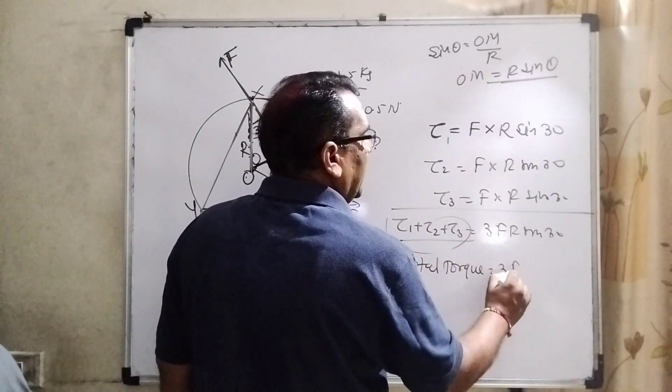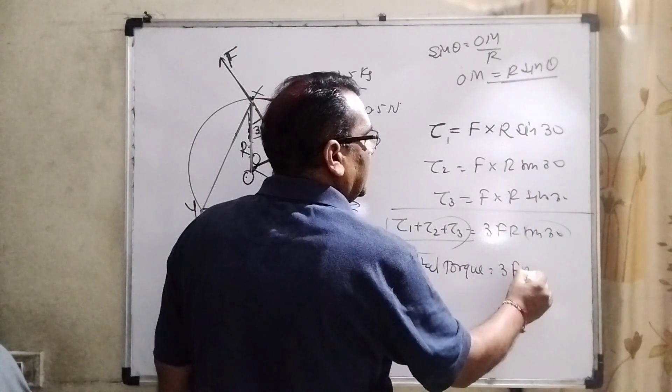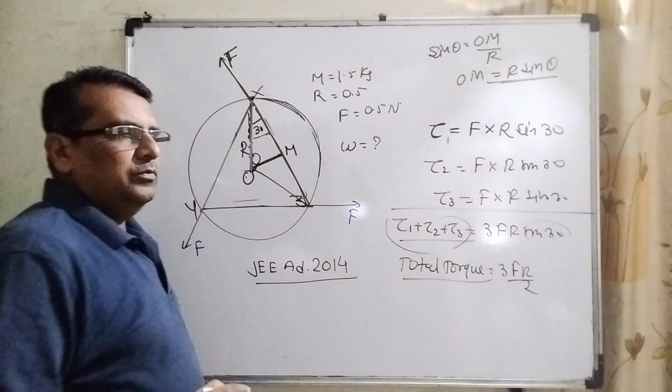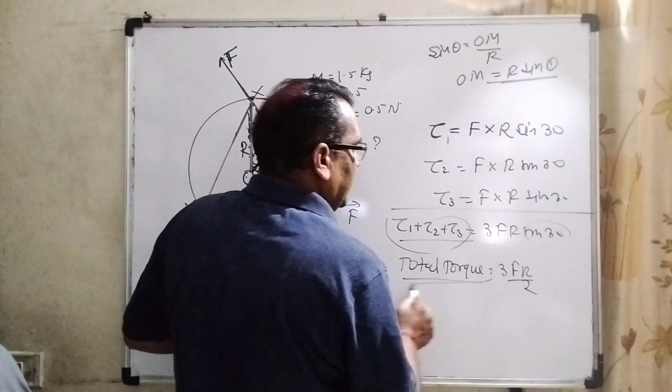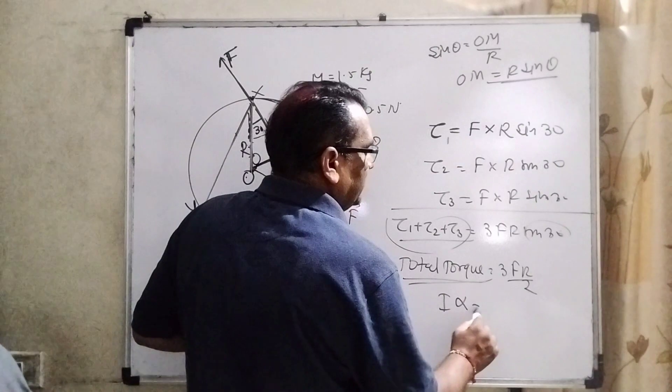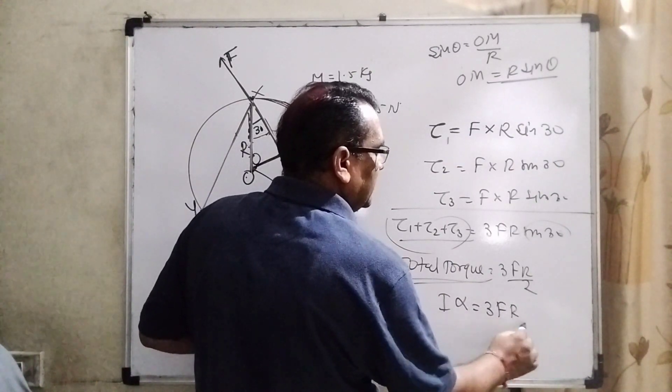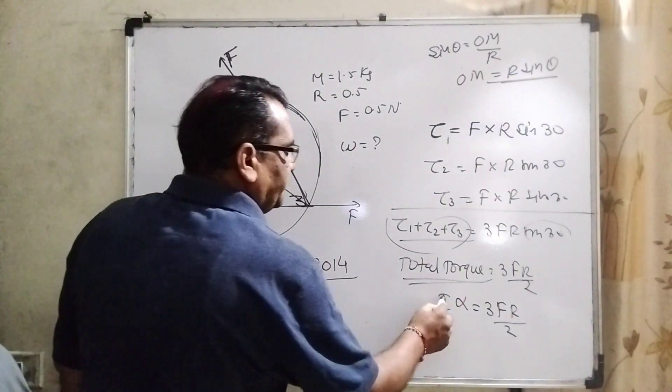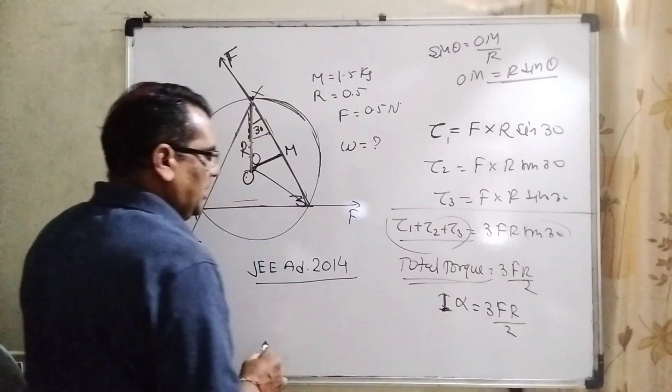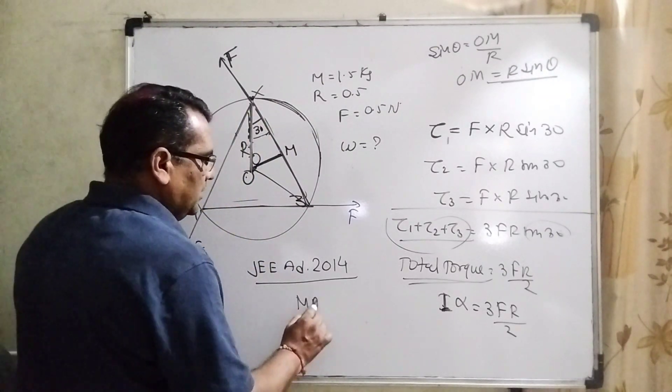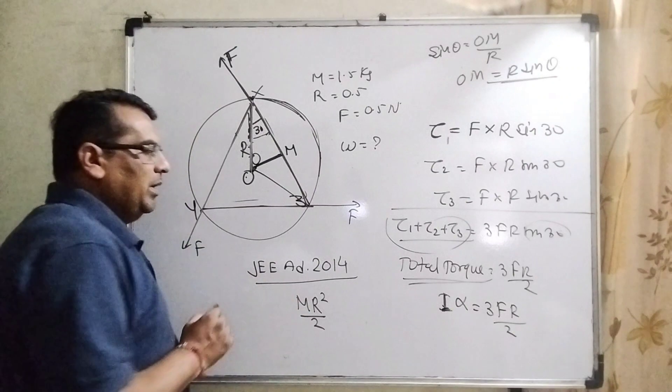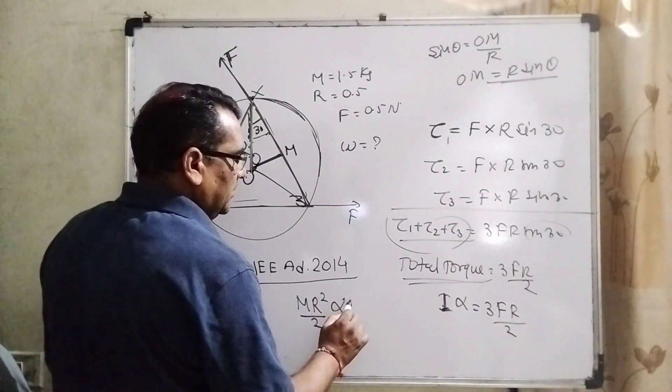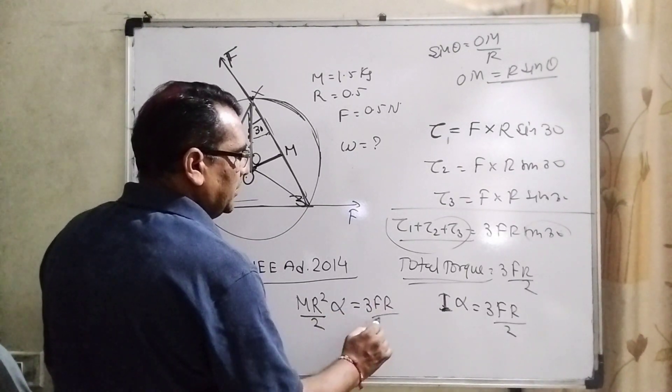Total torque equal to 3 F R. And what is the value of sin 30? Sin 30 is 1 by 2. And total torque can be related to I alpha. What is I? Moment of inertia of disk. And what is alpha? Angular acceleration. Then I, moment of inertia is M R square by 2 for a disk. And alpha equal to 3 F R upon 2 divided by M R square by 2.